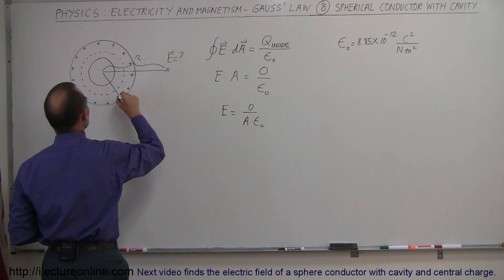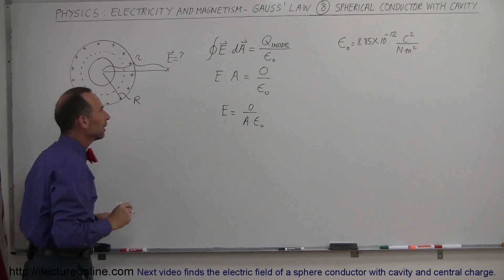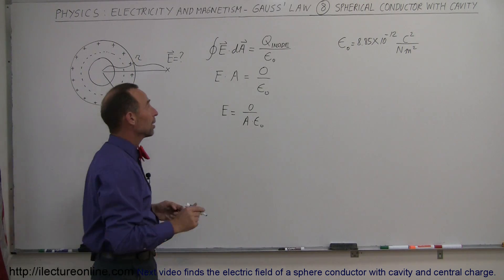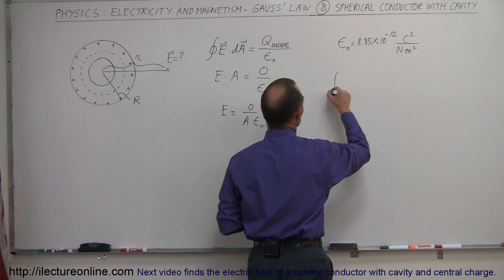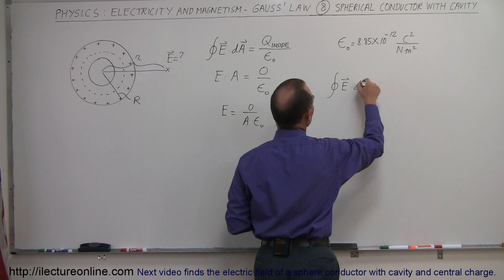This here will be the radius of the conductor, let's call that big R. So in this case, the equation then will become the integral, the surface integral of E dot dA.